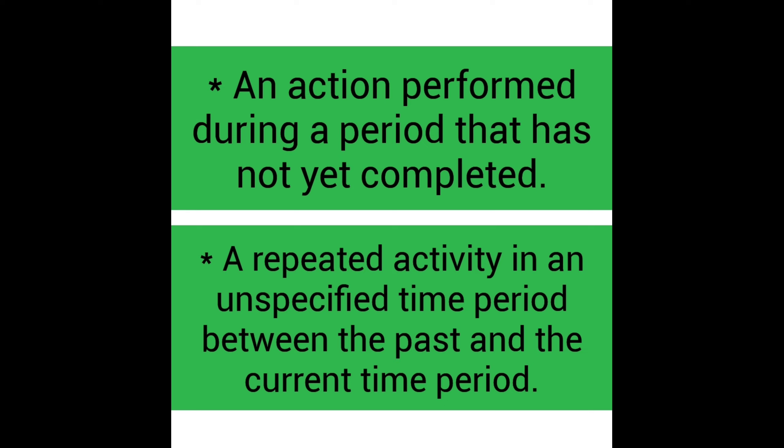Rule two — an action performed during a period that has not yet been completed. Rule three — a repeated activity in an unspecified time period between the past and the current time period.